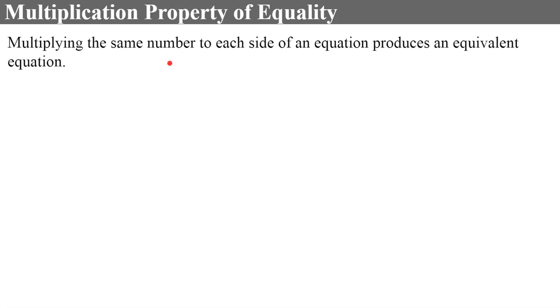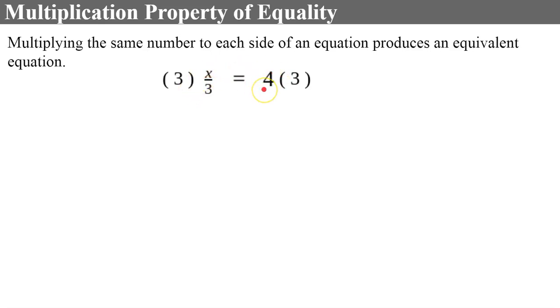Two more properties. The multiplication property of equality states that multiplying the same number to each side of an equation produces an equivalent equation. My example is x divided by 3 equals 4. The fraction bar is also a division symbol. The inverse of dividing by 3 is to multiply both sides by 3. Using the multiplication property of equality, what I multiply one side by, I must also multiply the other side by. x divided by 3 is equivalent to 1/3 times x; 3 and 1/3 are reciprocals and when multiplied equal 1, leaving 1x, or x. 4 times 3 is 12. Checking: 12 divided by 3 is 4.